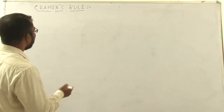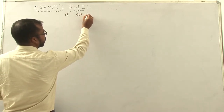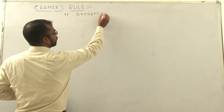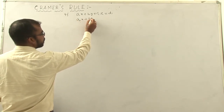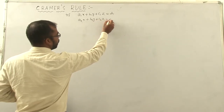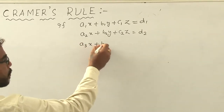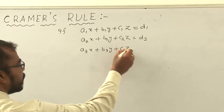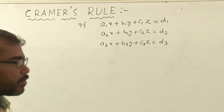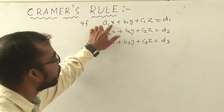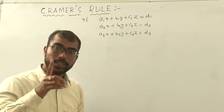What is Cramer's rule? If a1x plus b1y plus c1z is equal to d1, similarly another equation is a2x plus b2y plus c2z is equal to d2, and a third equation a3x plus b3y plus c3z is equal to d3. We have to take three equations because we take three number of variables.